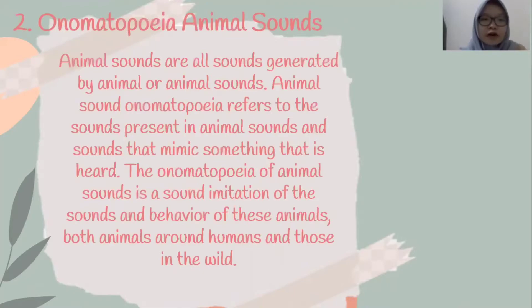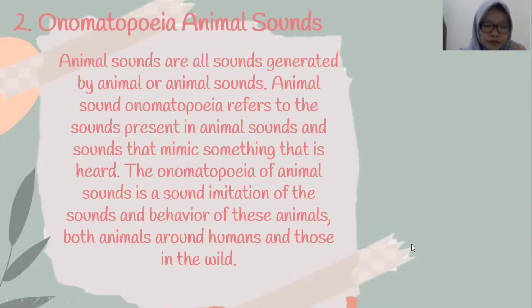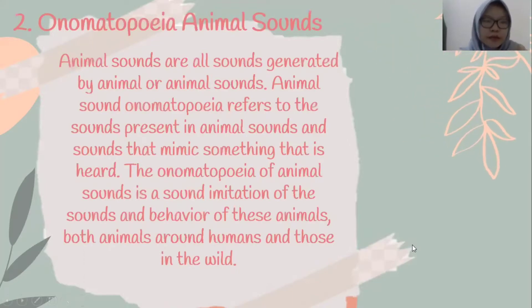Animal sounds onomatopoeia refers to sounds present in animal sounds, and sounds that mimic something that is heard. The onomatopoeia of animal sounds is a sound imitation of the sound and behavior of animals, both animals around humans and those in the wild. Onomatopoeia animal sounds appear from animals of different types.